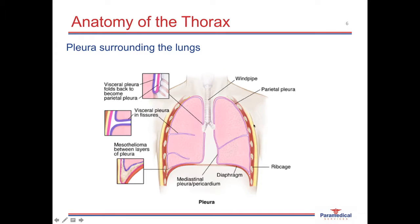This diagram depicts the pleura surrounding the lung. The visceral pleura, attached onto the lung surface, is shown in deep purple and doubles back on itself to form the parietal pleura, which then attaches onto the inside of the thoracic wall.